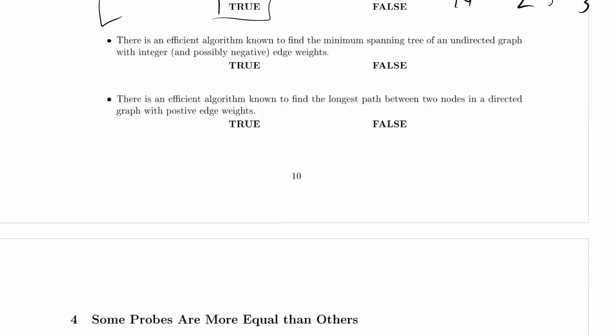There is an efficient algorithm known to find the minimum spanning tree of an undirected graph with integer and possibly negative edge weights. Yep, that would be our minimum spanning tree algorithm. What says that it's efficient? We've discussed the fact that it is fairly efficient, and we've discussed ways to make it very efficient. But in general, when we just use the word efficient without any additional notation on it, now we know we're talking about polynomial time. So yes, there is.